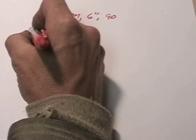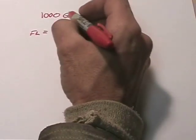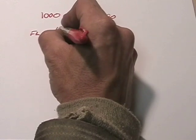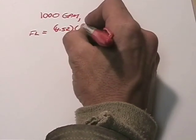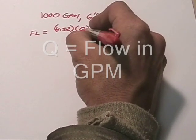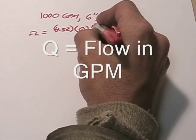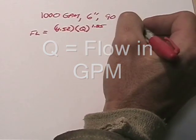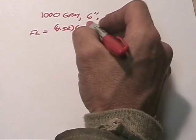The given formula that we're going to have to memorize is that friction loss equals 4.52 times the flow in gallons per minute, and then that's raised to the power of 1.85. So it's not as easy as squaring where you can do it by hand. You're going to have to have that scientific calculator.